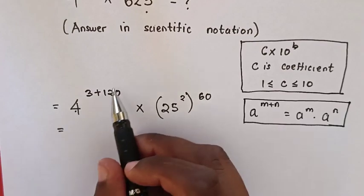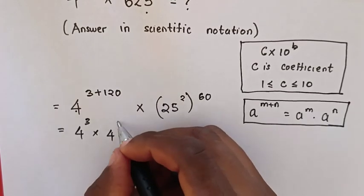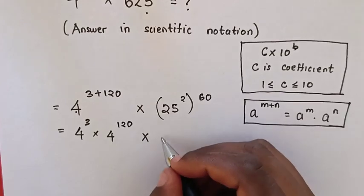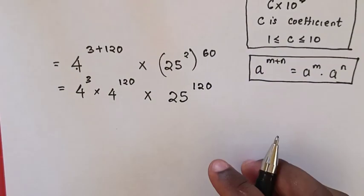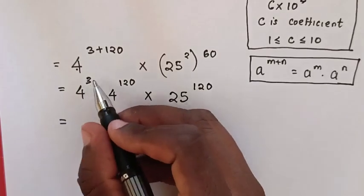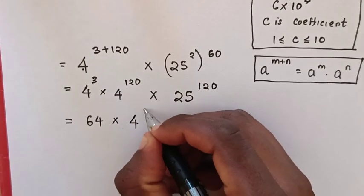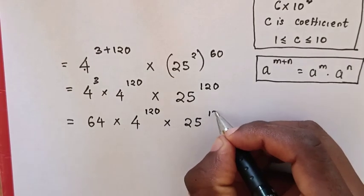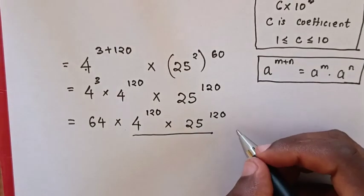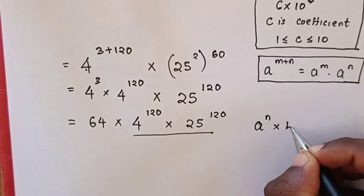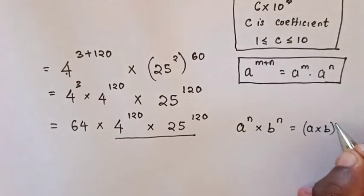Then, it will be 4 power of 3 times 4 power of 120, times 25 power of 2 times 60, which is power of 120. We will apply the exponential rule that A power of N times B power of N equals A times B, in brackets, power of N.